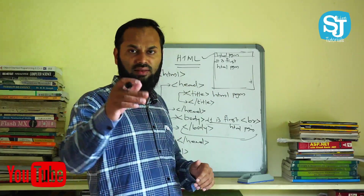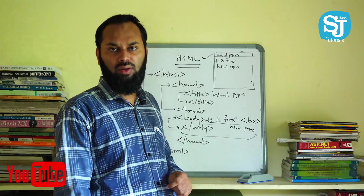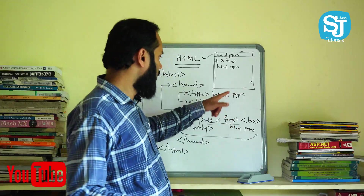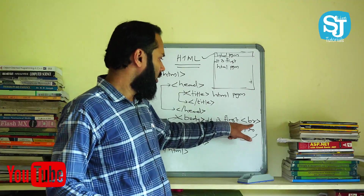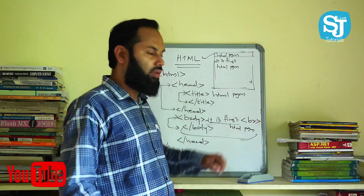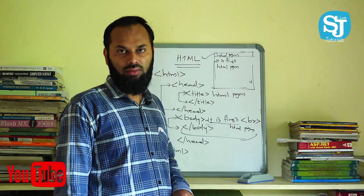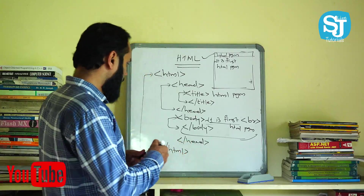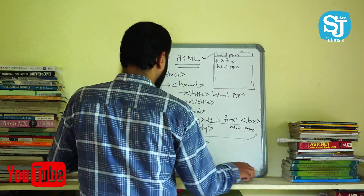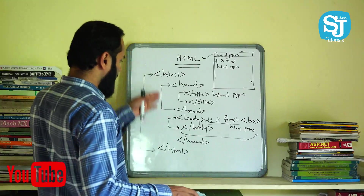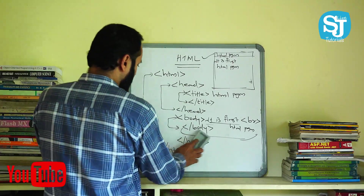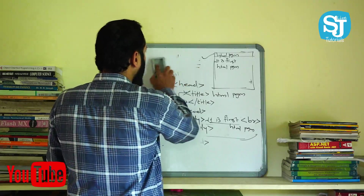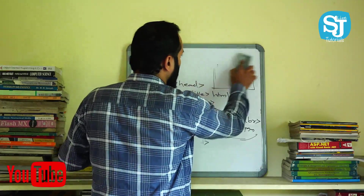If we're doing C programming, we use slash n. If we're doing HTML, we use BR. In this case, we're doing the basic structure — we have two types of tags.